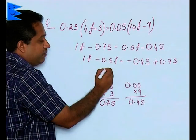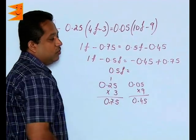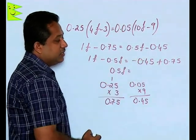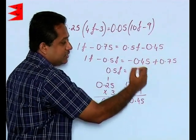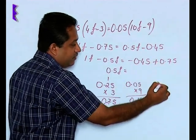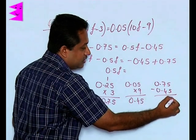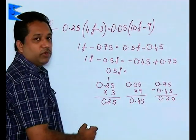1 minus 0.5 is 0.5F equals... There is a plus here and a negative. Plus and minus means negative, which means you will have to subtract this. 0.75 minus 0.45 is going to give us 0.30, or we can simply write it as 0.3.